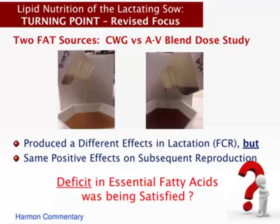In recent work with David Rosero, we looked at two types of fat in lactation at increasing levels. Neither fat did much for pig weight gain under heat stress when sows were truly full-fed. But for feed conversion: choice white grease improved it with increasing levels, while AV blend actually made it slightly worse — the two fats moved in different directions, meaning they weren't being used equally. This ties into thinking about fat quality, as Jerry Shurson has discussed.